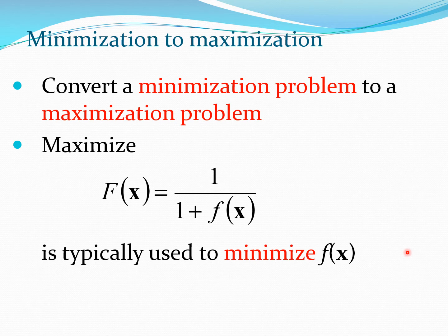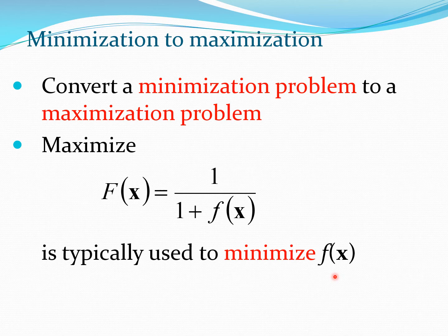In many situations you may be presented with a minimization problem — for example, minimizing weight or vibration in engineering. To convert this to a maximization problem, we create a new function F(x) = 1 / (1 + f(x)), where maximizing F(x) is equivalent to minimizing f(x). Note that we don't use a negative sign as in classical optimization, because that would make the objective function negative. We also don't need to worry about the non-linearity introduced here, since GA doesn't deal with gradients.